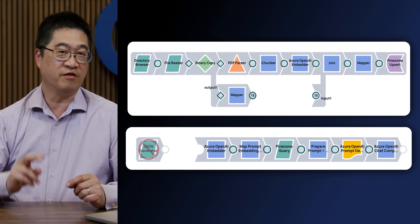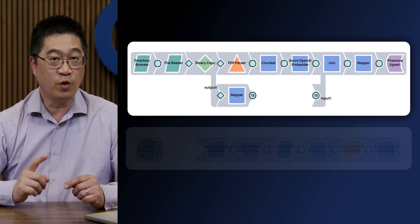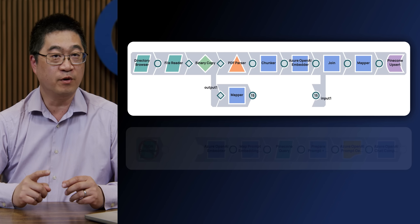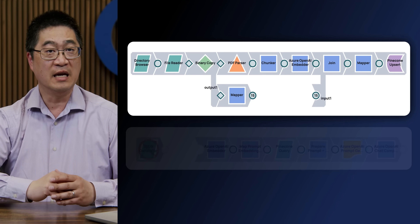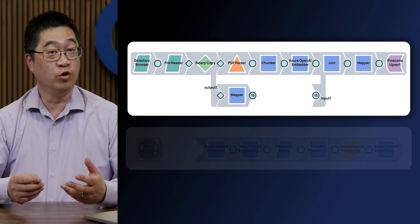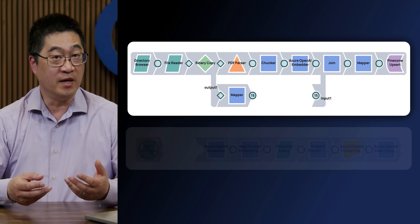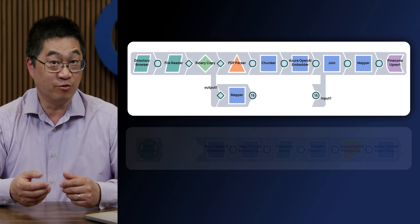Let's take a look at the pipelines enabling all of this to work. There are two sets of pipelines. The first one is responsible for ingesting documents into the vector database used for retrieval augmented generation, otherwise known as RAG.